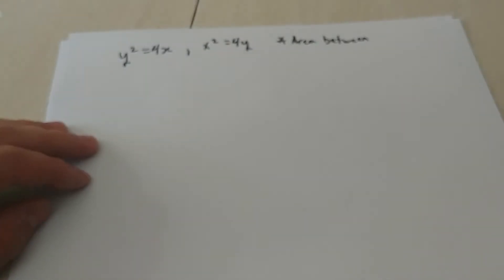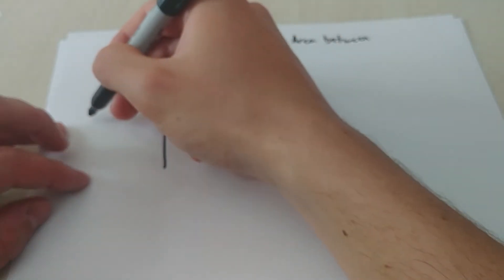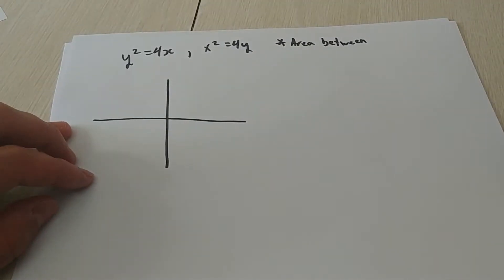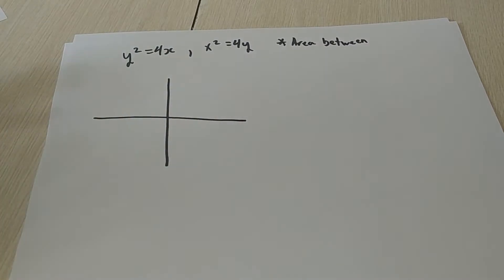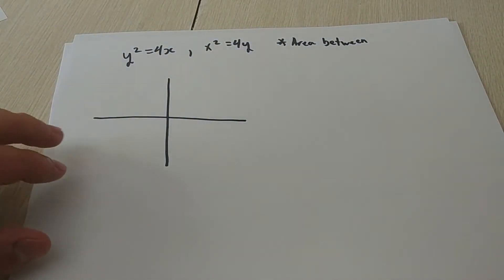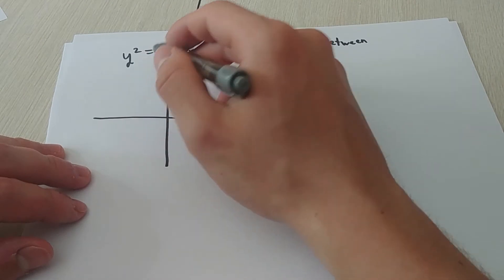For the first example we have y squared equals 4x and x squared equals 4y. We want to find the area between them. The first step is to find the area, and I always find it very helpful to sketch out the graphs so you actually know what you're doing.